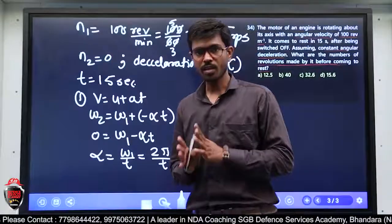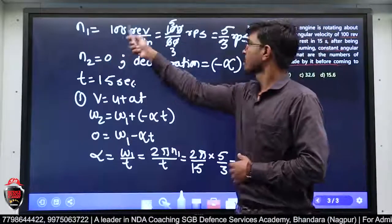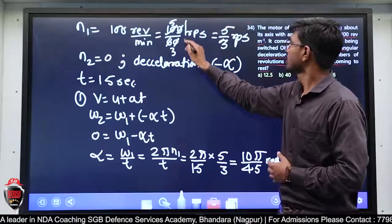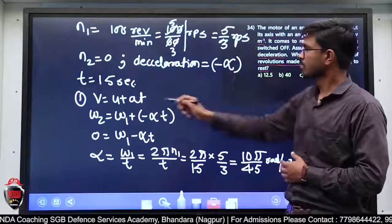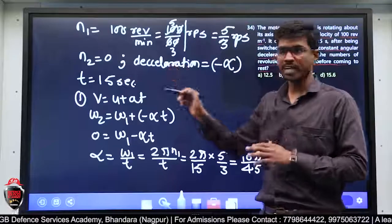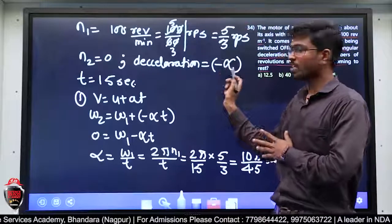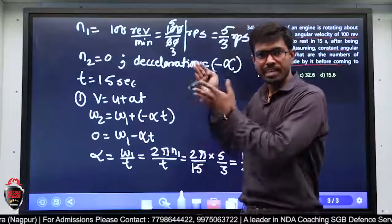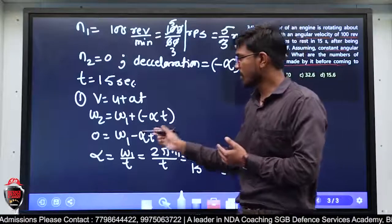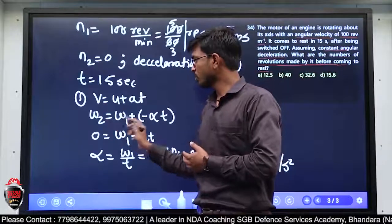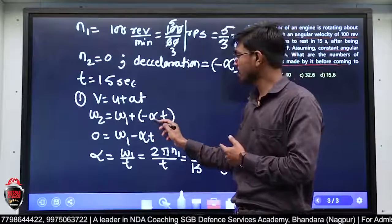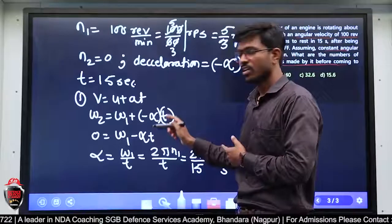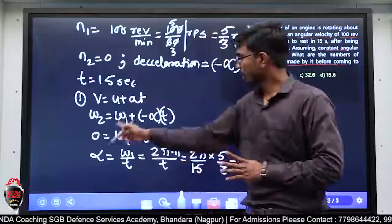हमको N₁ दिया था revolution per minute में — इसको revolution per second में convert किया: 100/60 = 5/3 RPS। N₂ = 0 (rest पर), deceleration — इसलिए minus alpha। Time = 15 seconds। v = u + at को angular में convert किया: ω₂ = ω₁ + αT। Alpha मेरा negative है — minus alpha put किया। ω₂ = 0 था।